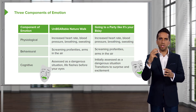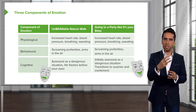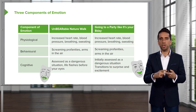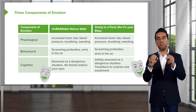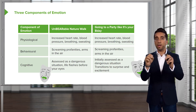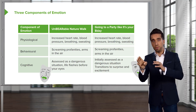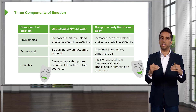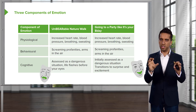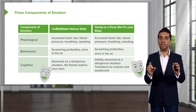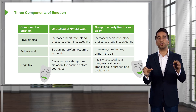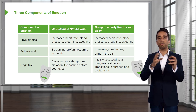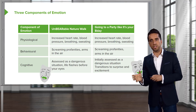Just to summarize: three components. Two of the three — physiological and behavioral — would be the same for the bear attack or the party your mom threw for you. But cognitively, you see some differences there, and that results in two different emotions: fear versus happiness and excitement.